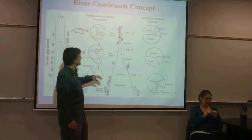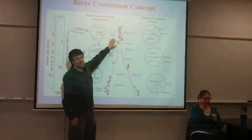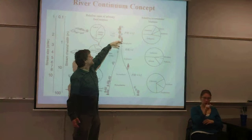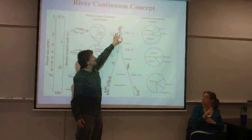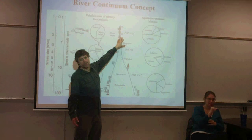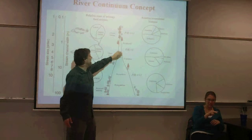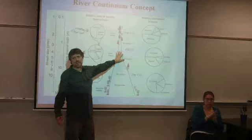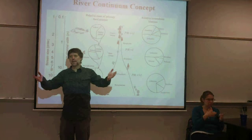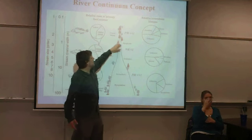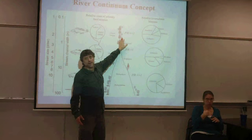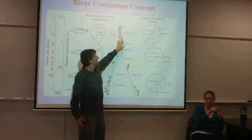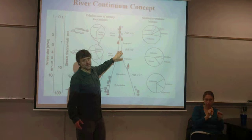This idea is based on a deciduous forest stream. Deciduous forests have canopy that covers these first and second order streams. Then the stream gets wide enough that it doesn't matter that there's canopy there because light can get in anyway. And we go from a very net heterotrophic, allochthonous-driven system to a more autochthonous system.